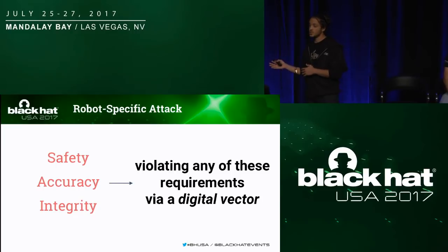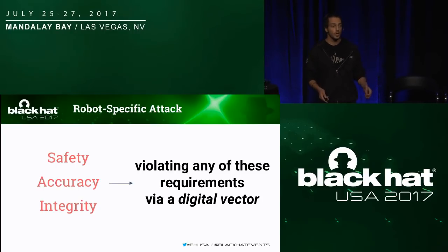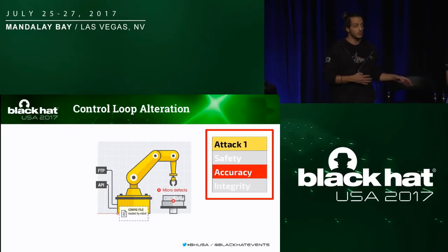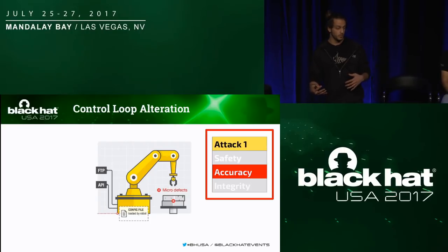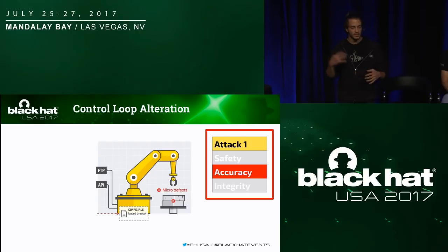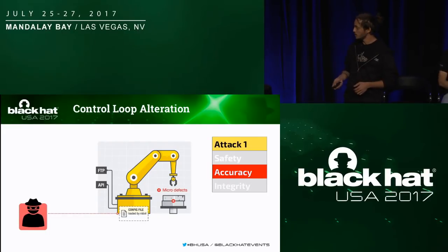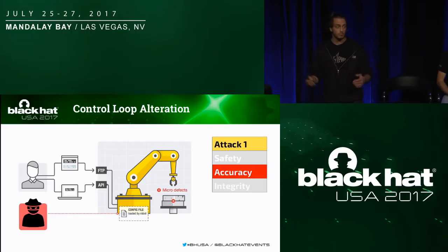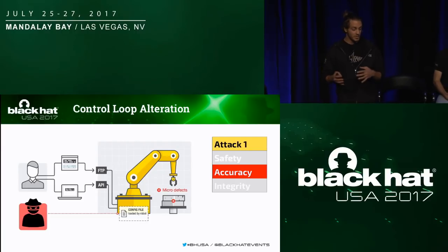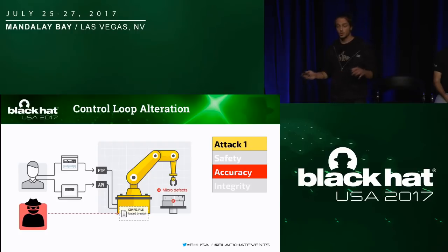A robot-specific attack is a digital-born violation of these requirements. We developed five of them. The first is control loop alteration. These robots are pretty flexible, and we found that there are usually configuration files that store implicit parameters — for example, the control loop properties, kinematics values used to calculate the next position. What if an attacker can modify these config files? After the compromise, when the user tries to execute the program, since the representation of the physical world for the robot has changed, something weird can happen.